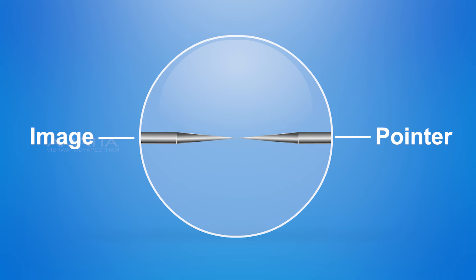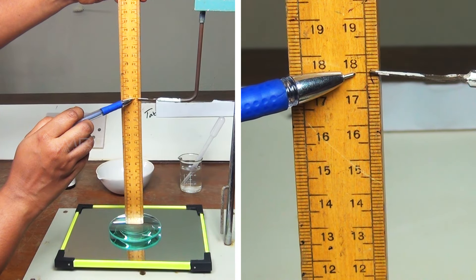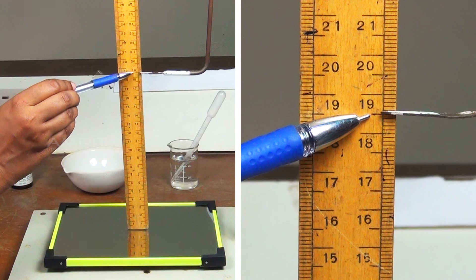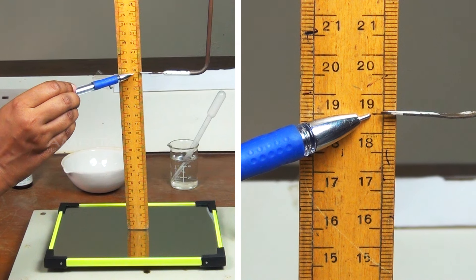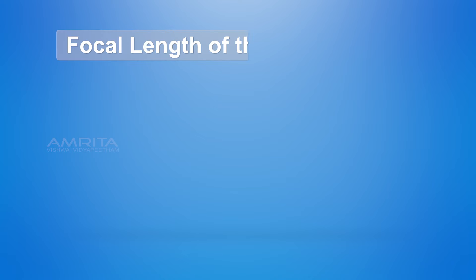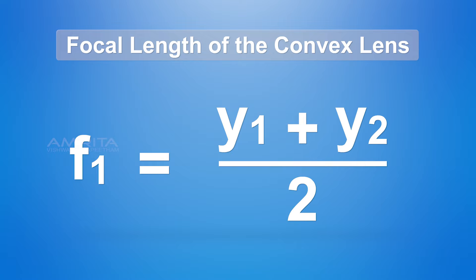The image and object will be of the same size. The distance of the pointer from the top y1 and bottom y2 are measured. The average of these values gives the focal length F1 of the convex lens.